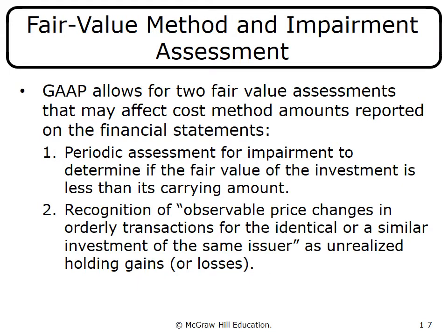GAAP allows two fair value assessments that may affect cost method amounts. If fair market value cannot be determined but there is an impairment—meaning fair value is considerably less than original cost—you must write the investment down. Similarly, if there is an observable price change in identical or similar investments of the same issuer, you write it down to the lower amount even without a formally determinable fair market value.